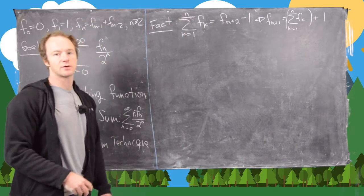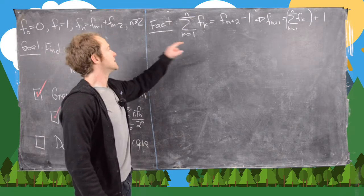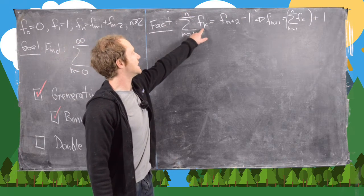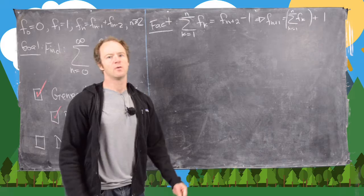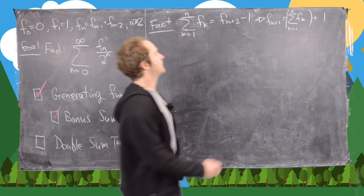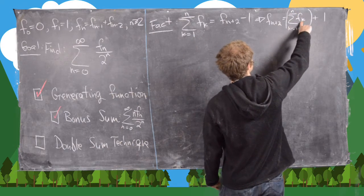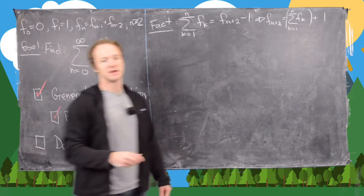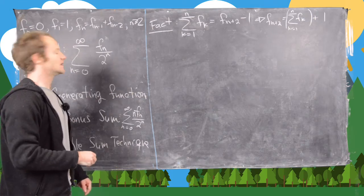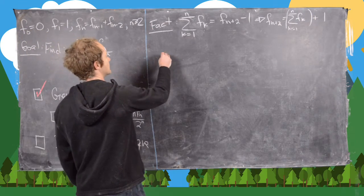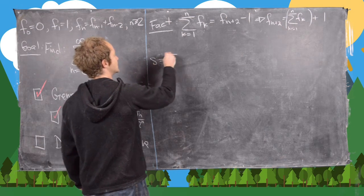Now for the double sum technique. We need the identity: the sum from k=1 to n of f_k equals f_{n+2} - 1, which means f_{n+2} equals (sum from k=1 to n of f_k) + 1. This is the key identity we'll use.